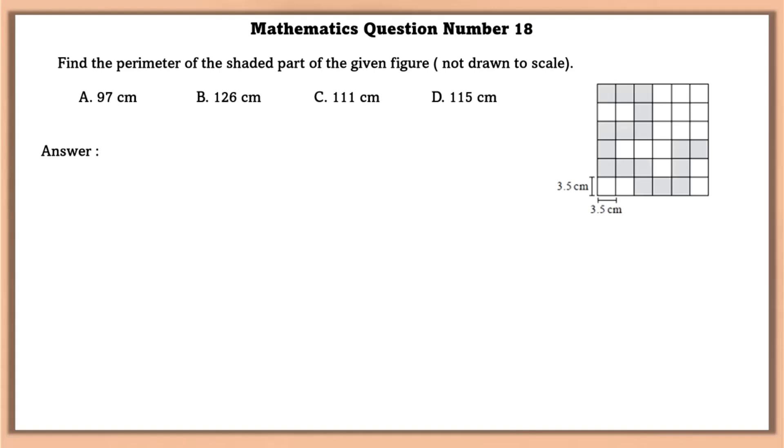Mathematics question number 18. Find the perimeter of the shaded part of the given figure. Here is the shaded part. And one side of a square is 3.5 cm. So number of sides that is 36, which measures 3.5 cm. So using this, we can find the perimeter that is 126 cm.